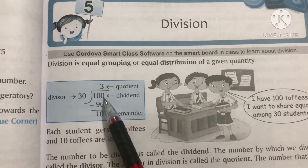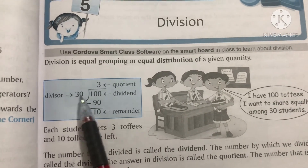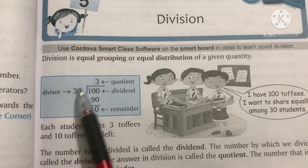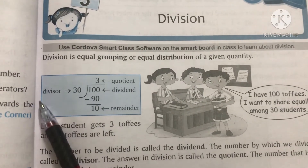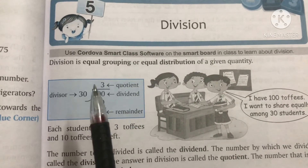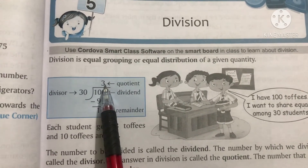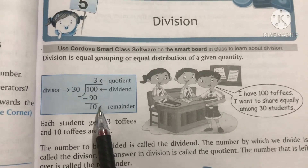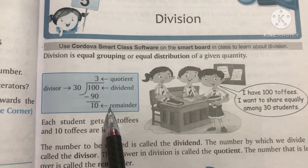the number which is divided is called dividend. The number by which we divide the dividend is known as divisor. The answer in division we get is called the quotient, and the number that is left after the division is called remainder.